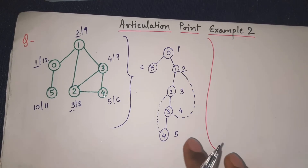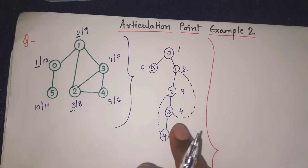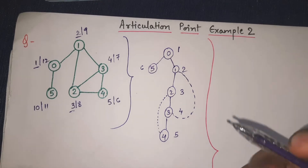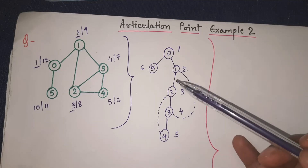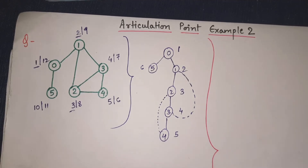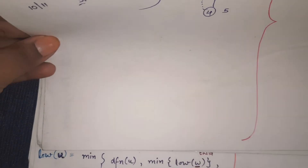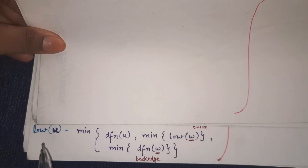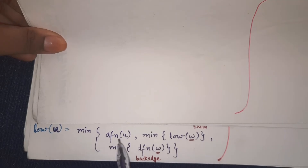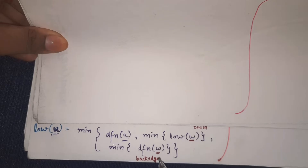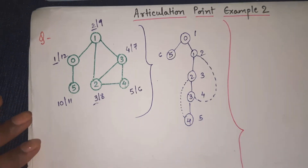This tree construction was the primary step — any error here can make the whole solution wrong. The next important step is to find low of all nodes: low(0), low(1), low(2), low(3), low(4), and low(5). The formula is: low(u) = min( dfn(u), min(low(w)) for child w, min(dfn(w)) for back edge w ). If no child is present use dash; if no back edge is present use dash.